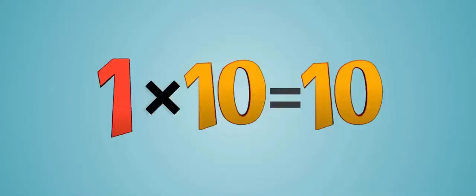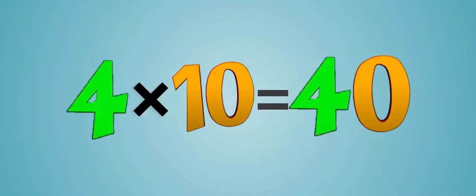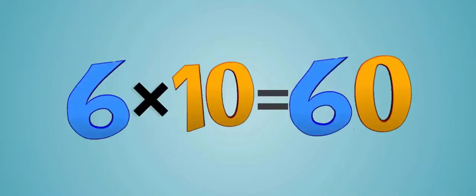One ten is ten, two tenths are twenty, three tenths are thirty, four tenths are forty, five tenths are fifty, six tenths are sixty.